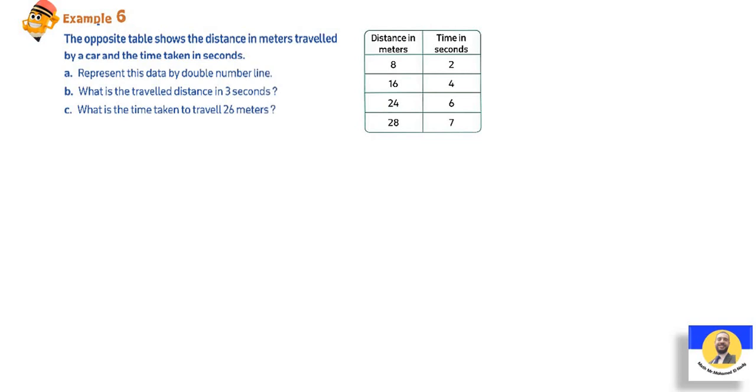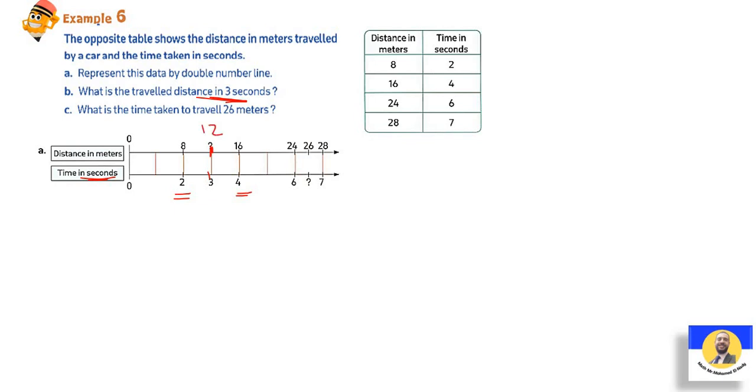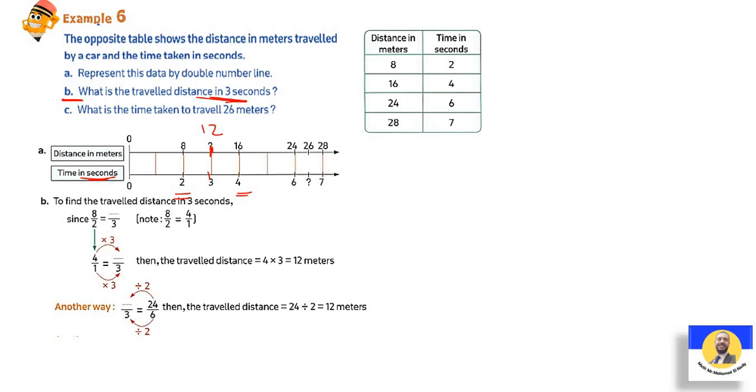Next example: The opposite table shows the distance in meters traveled by a car and the time taken in seconds. Represent this data by double number line. Easy. Double number line: distance in meter and time in second. We write here 8 and 2, 16 and 4, 24 over 6, and 28 over 7. What is the travel distance in 3 seconds? If we go to the second, between 2 and 4 we have 3, so it's in the middle. So also in the middle between 8 and 16, that will be 12. Someone can say, can we do it by steps? Of course. We can do it by steps.